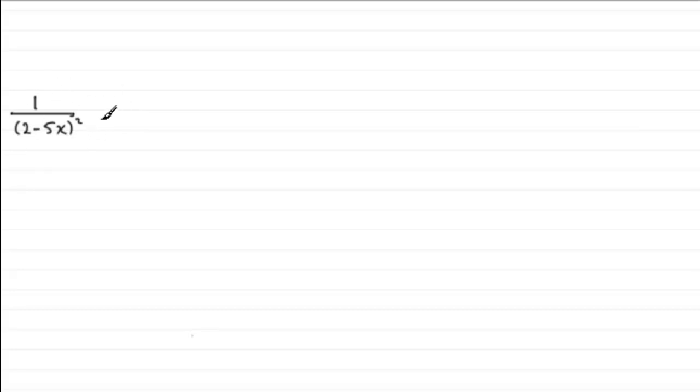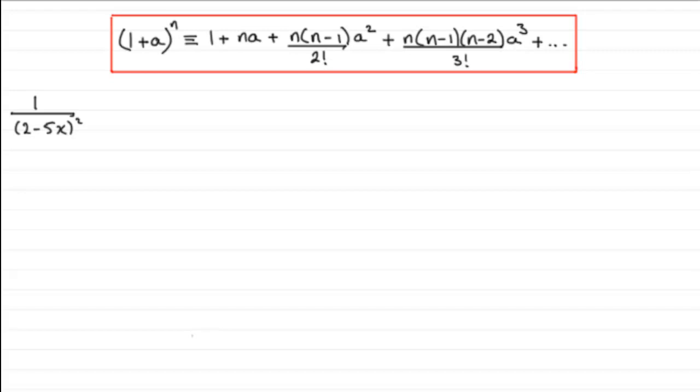Well what we need to be familiar with is the binomial expansion. I'm assuming you are, if not there are tutorials on my website on this. But for now here's just a brief reminder: the binomial expansion formula when you want to expand 1 plus a to the power n, it's identical to 1 plus na plus n times n minus 1 over 2 factorial times a squared and so on.